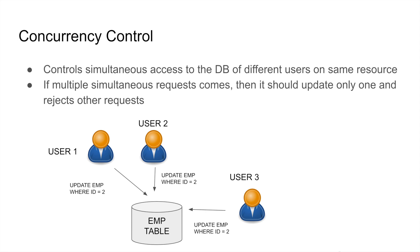That is the second record. In this case, the output is unpredictable, and we won't have any idea which request could modify that particular second record. If any one user's request is successful, the other two users won't have the latest version. So this is a critical situation and some data inconsistency would happen here.